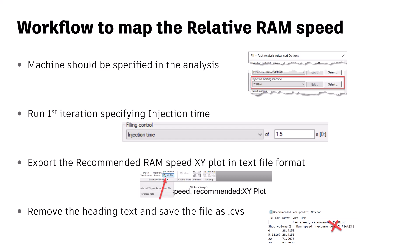Run the first iterations by specifying the injection time, since we don't know the relative ram speed yet. Don't make assumptions — go with specifying the injection time. I tried an example where I specified an injection time of 1.5 seconds. Once you get the results from a fill, pack and warp analysis, or even just a fill analysis, irrespective of the mesh type — mid-plane, dual domain, or 3D — you should get the plot called RAM speed XY or the recommended RAM speed XY plot.